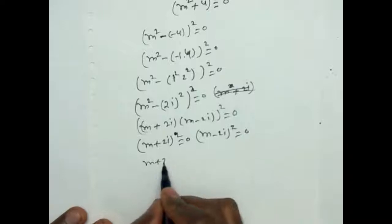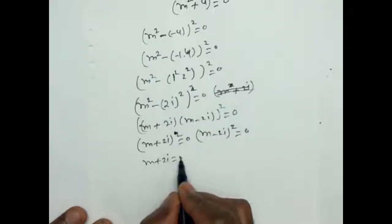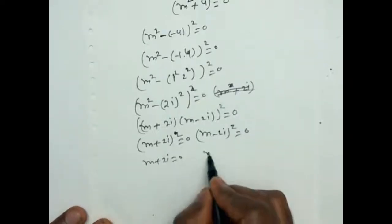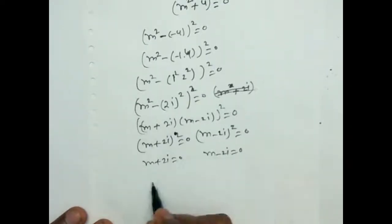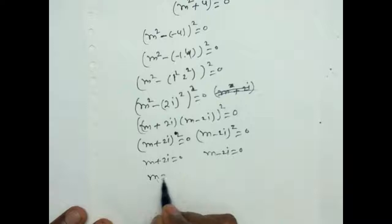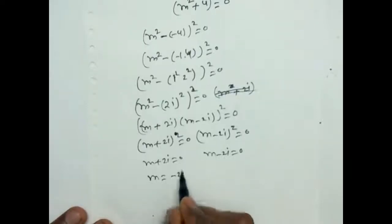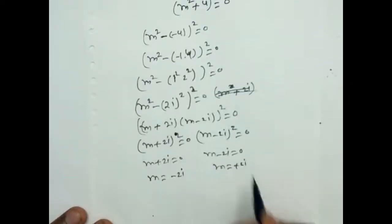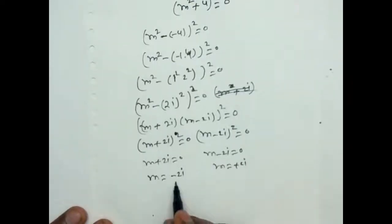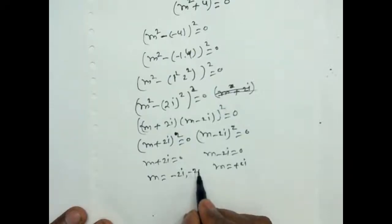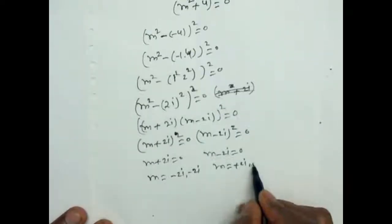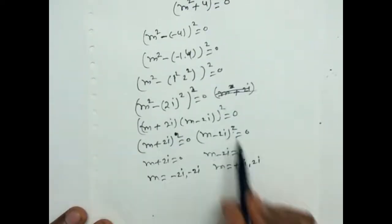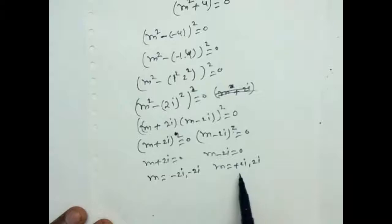From m + 2i = 0, we get m = −2i. From m − 2i = 0, we get m = +2i. Because of the square, −2i comes 2 times and +2i comes 2 times.